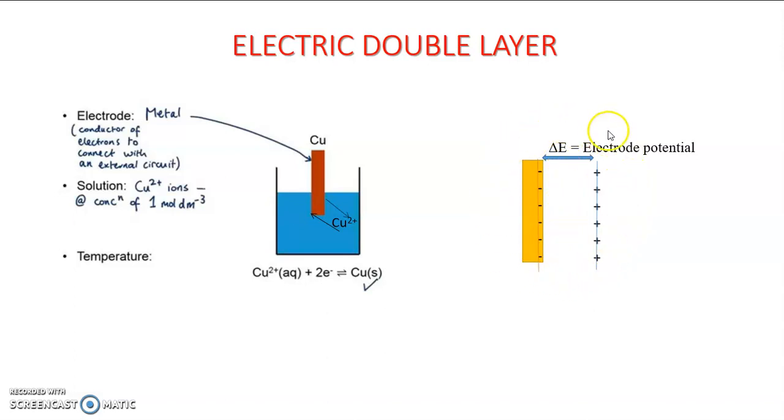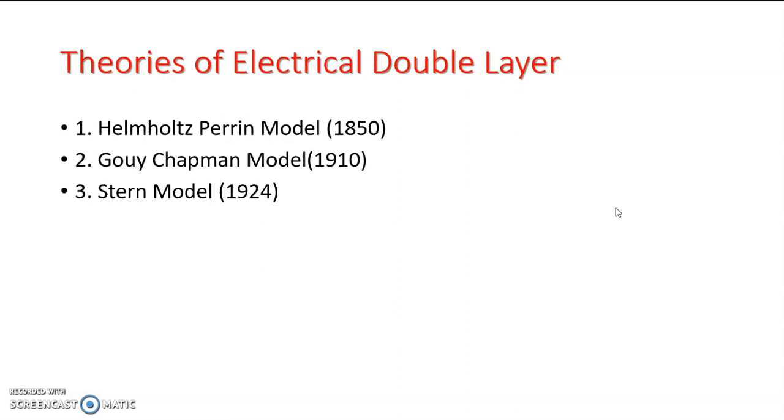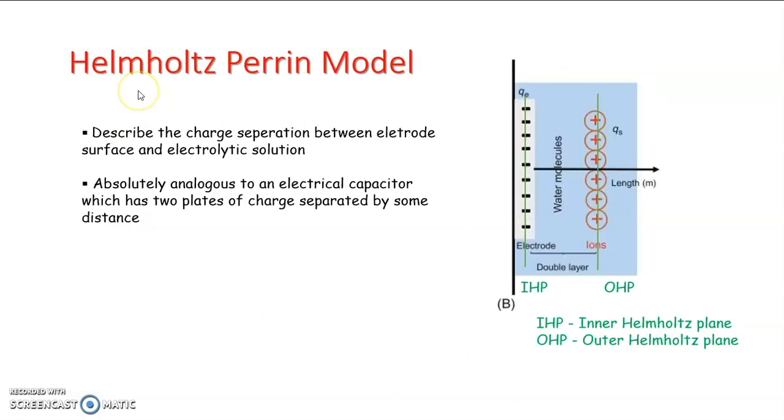About electric double layer, different scientists proposed various theories. There are three theories. First one is Helmholtz-Perrin model. It was put forward by Helmholtz and Perrin in 1850, which is further modified by Gouy-Chapman and Stern.